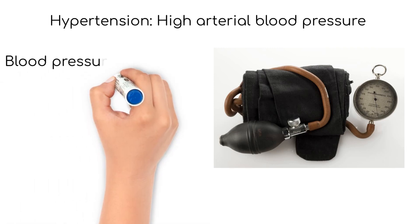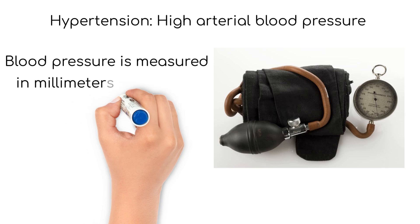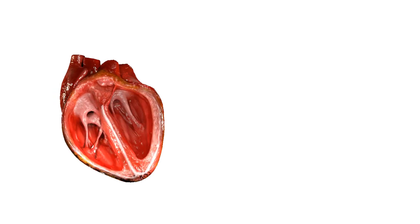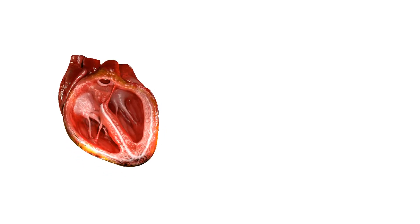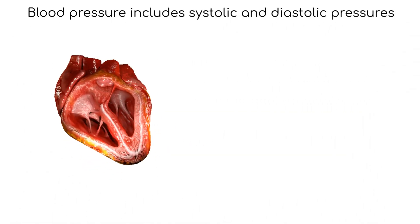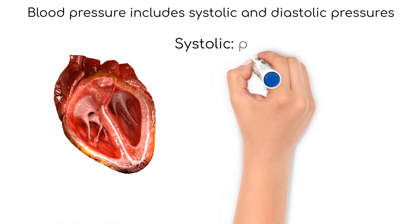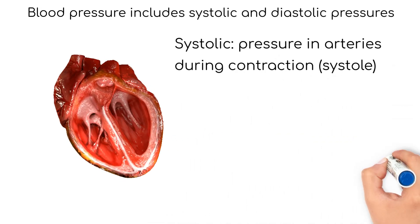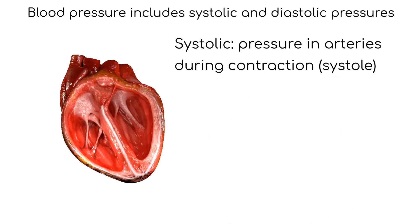Blood pressure is measured in millimeters of mercury and consists of both systolic and diastolic pressures. The systolic pressure represents the pressure in the arterial system during contraction of the heart's ventricles, which is called systole.